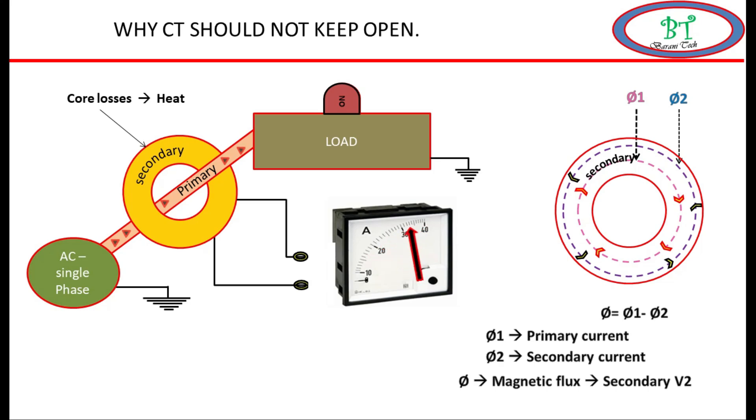In case the secondary current flow path is broken, due to this the current will not flow, so the opposite flux phi-2 is not produced. So the main flux equals the net flux, which causes high voltage at CT secondary.